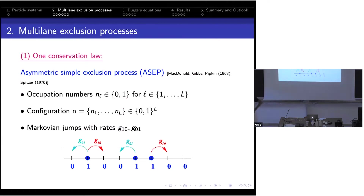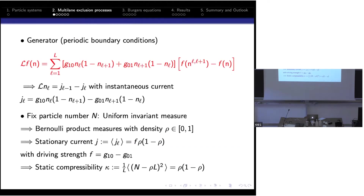I want to talk about lattice gas models, and let me introduce the simplest one: the asymmetric simple exclusion process (ASEP), which has only one conservation law. We have a lattice of L sites with periodic boundary conditions. It's an exclusion process: each lattice site is either empty or occupied by a particle, so configurations are specified by occupation numbers zero or one. Particles jump right and left with rates g10 and g01, and exclusion means you cannot jump to an occupied site.